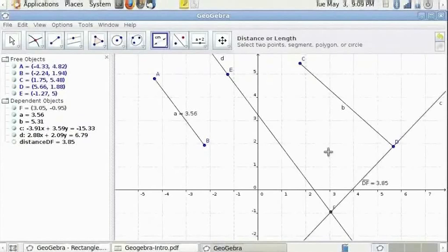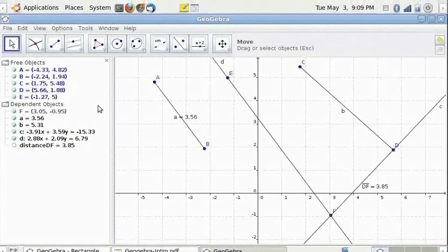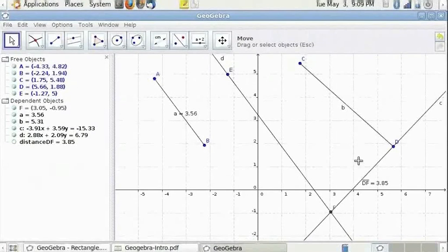You can change the properties such as the label and color of each of the items. Before that if you don't want to draw any object, please use the arrow key here. So when you use that, it will not draw any object on the drawing pad.